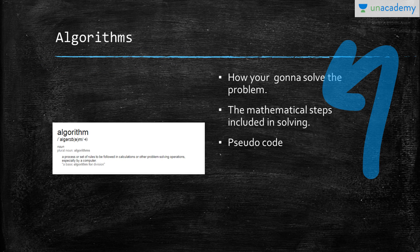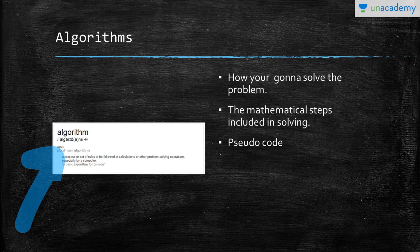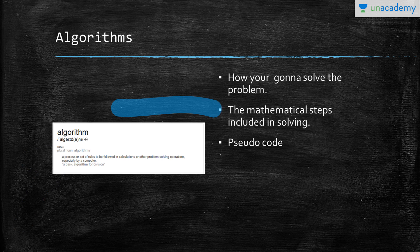Here's the definition of algorithm provided by Google and Wikipedia. It's a process or a set of rules to be followed in a calculation to solve the problem. An algorithm includes the steps that we are going to take to solve the problem or the mathematical functions or formulas.